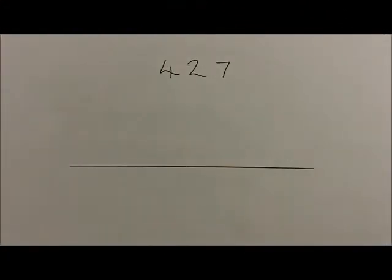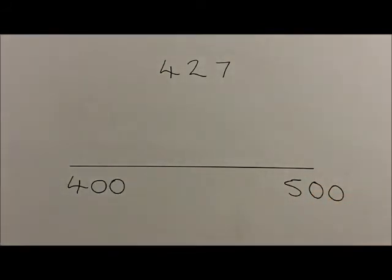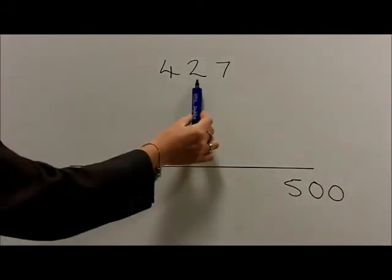With the number 427, the two multiples of 100 that 427 lies in between are 400 and 500. We then follow the rounding rules by looking at the digit in the tens.